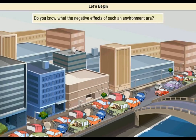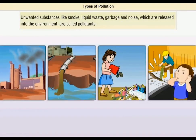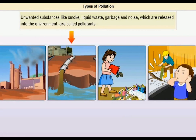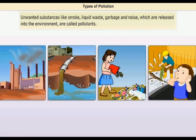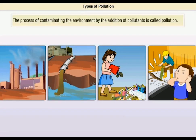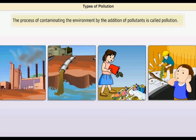Come, let's find the answer to this question and look much more in this module. Unwanted substances like smoke, liquid waste, garbage and noise which are released into the environment are called pollutants. The process of contaminating the environment by the addition of pollutants is called pollution.